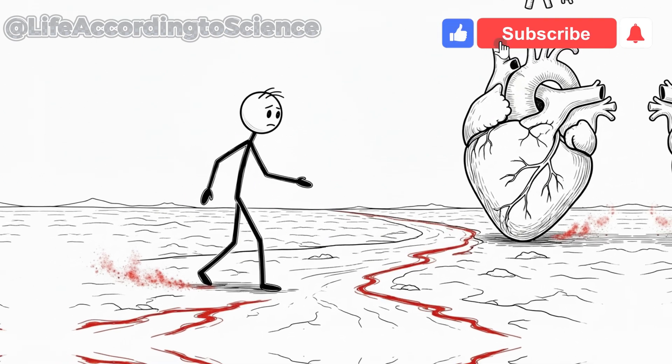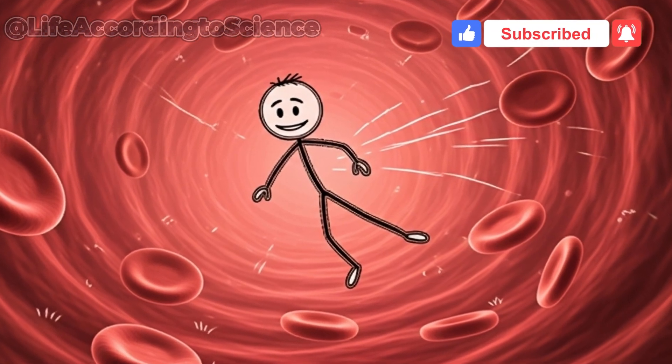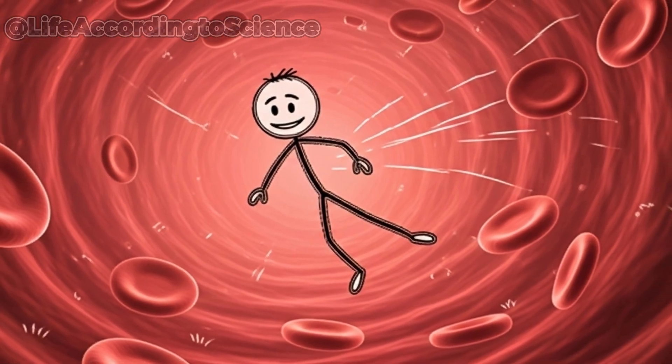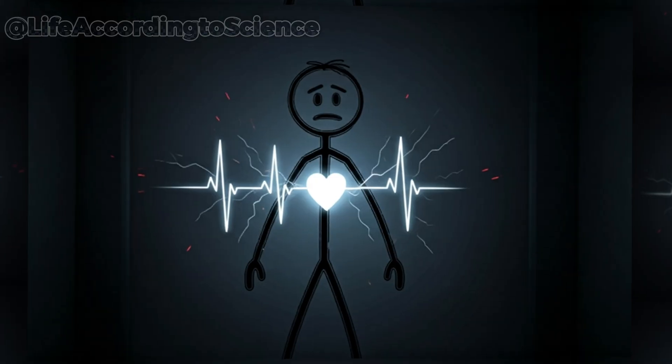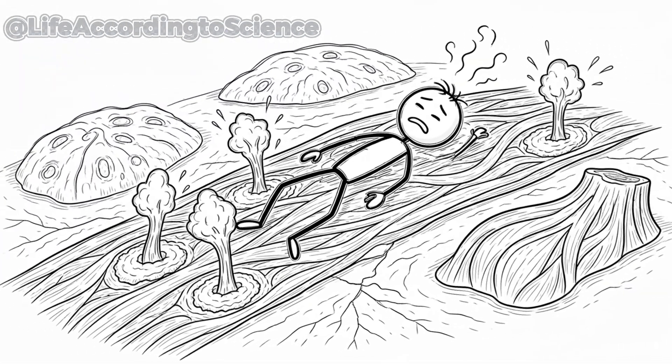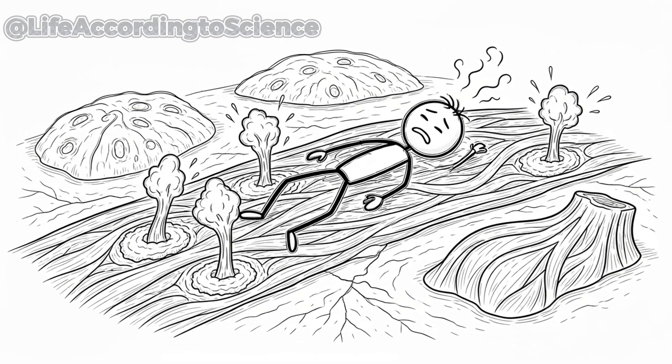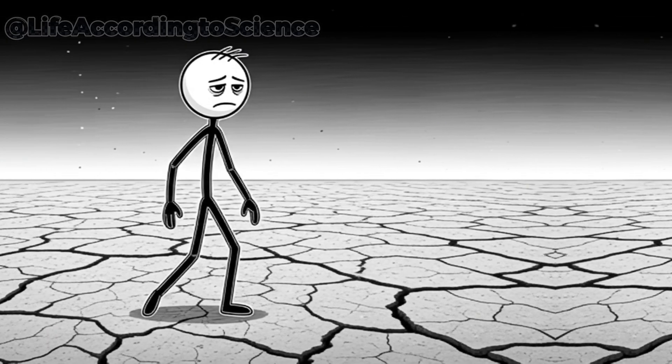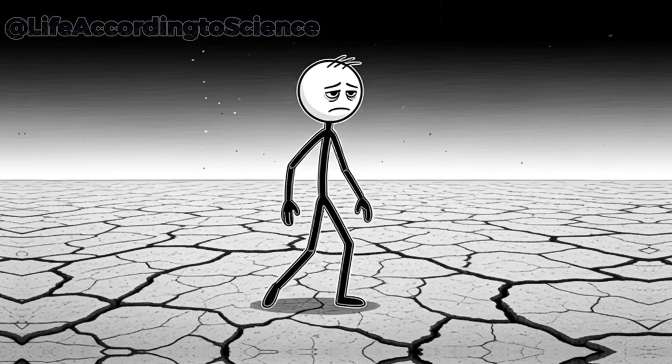By the fifth day, your blood has become noticeably thicker. The reduced plasma volume makes circulation sluggish, and oxygen delivery slows. Your heart, already overworked, now faces more resistance, increasing the risk of fainting or even heart arrhythmia. Each beat is a desperate effort to keep your organs alive. Your cells, starved for hydration, begin to pull water from surrounding tissues. This causes swelling in some areas and shrinkage in others, leading to muscle cramps and spasms. Your skin might feel tight, dry, and almost leathery to the touch.